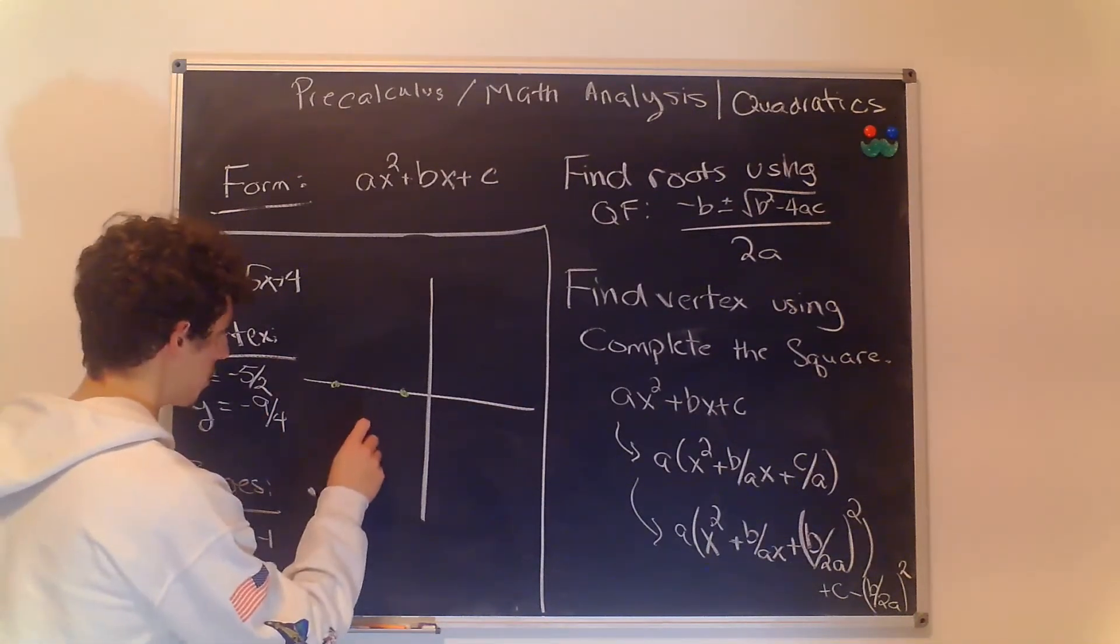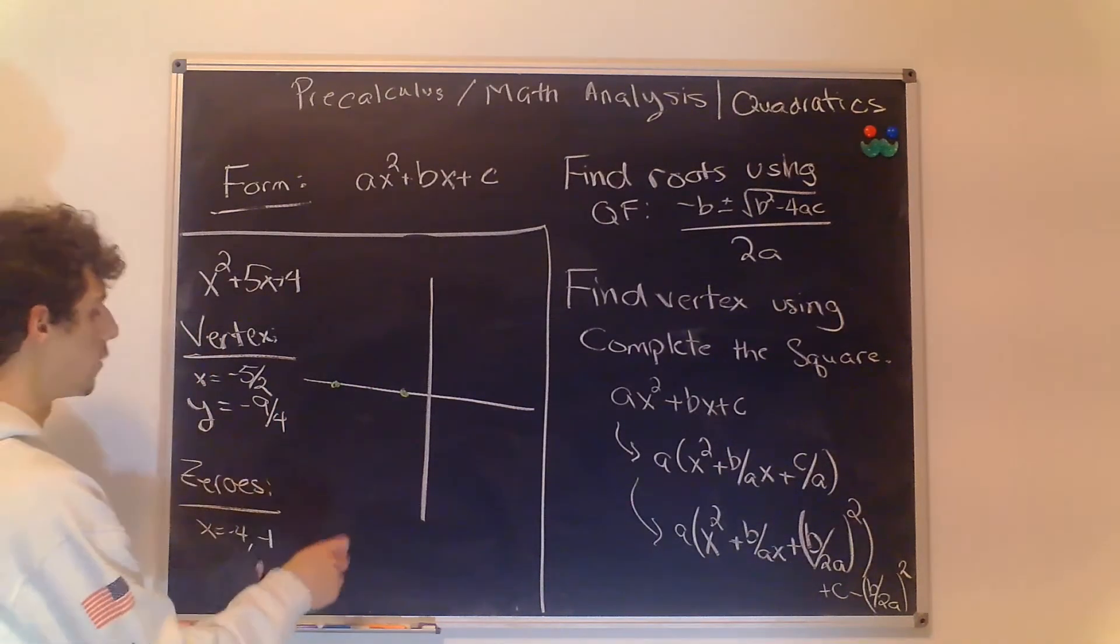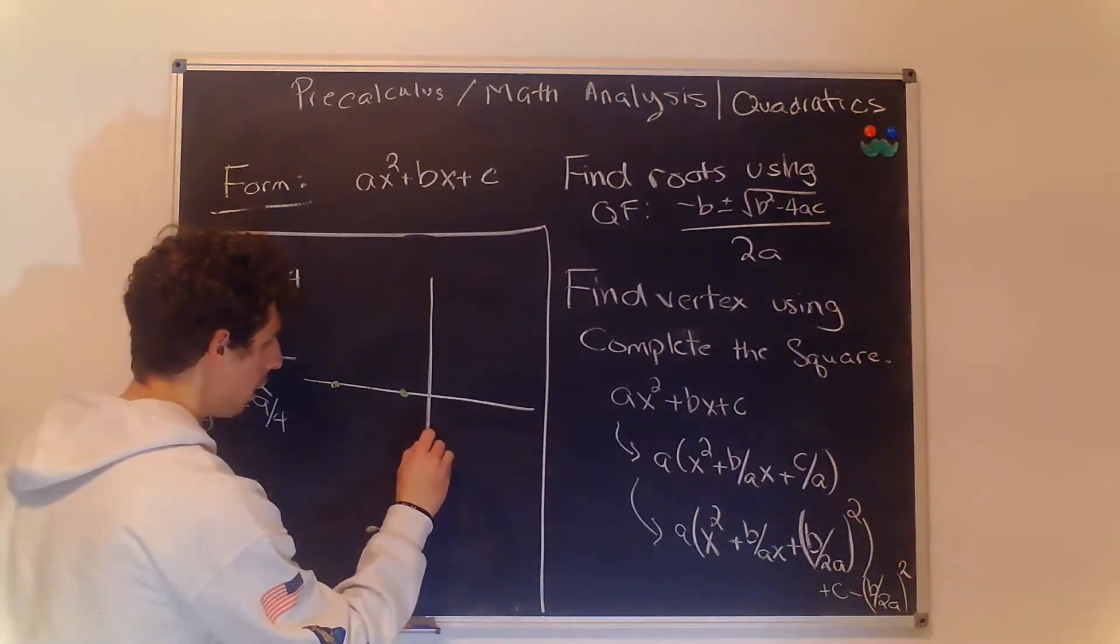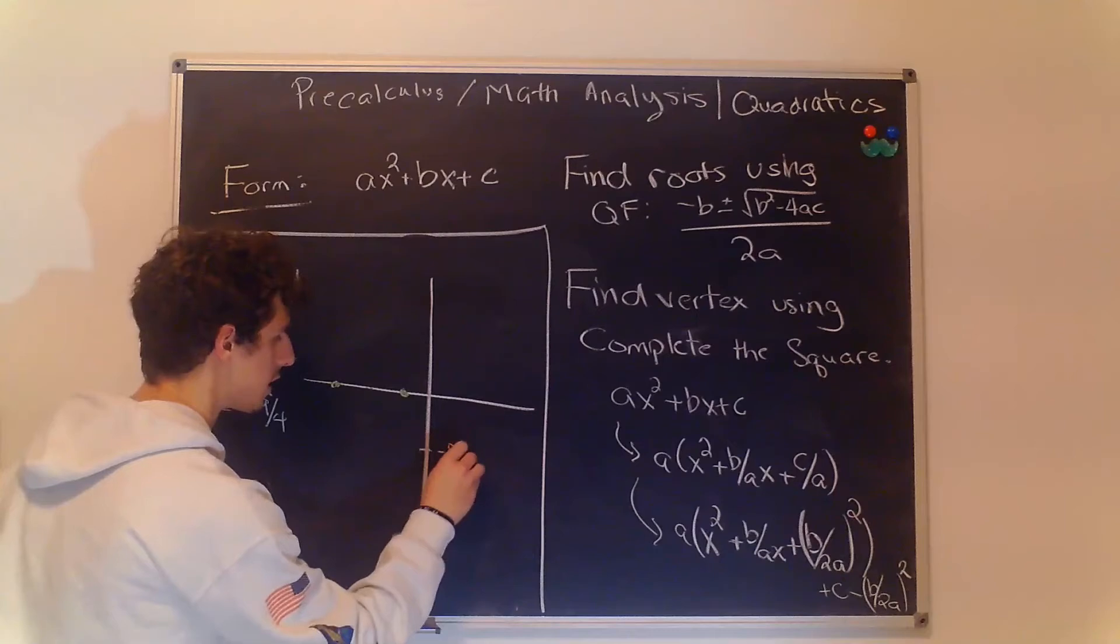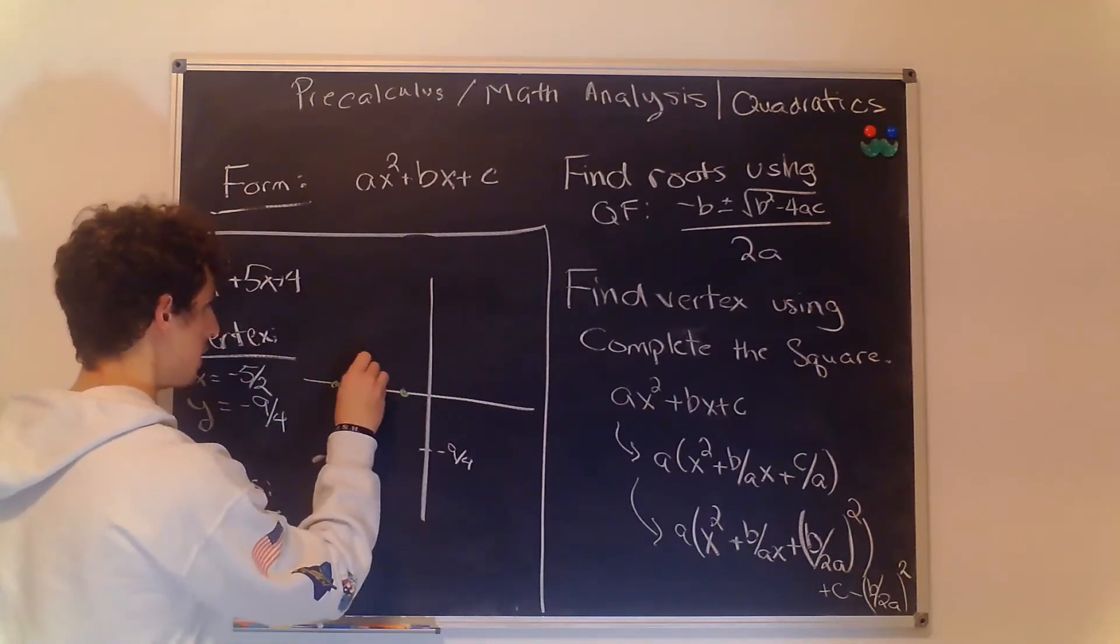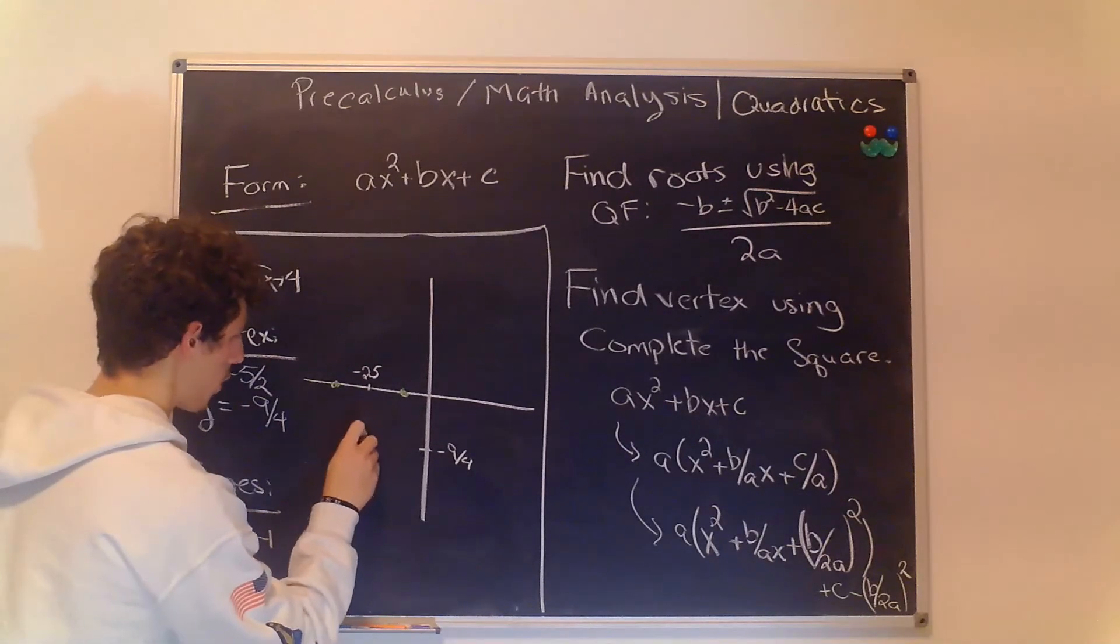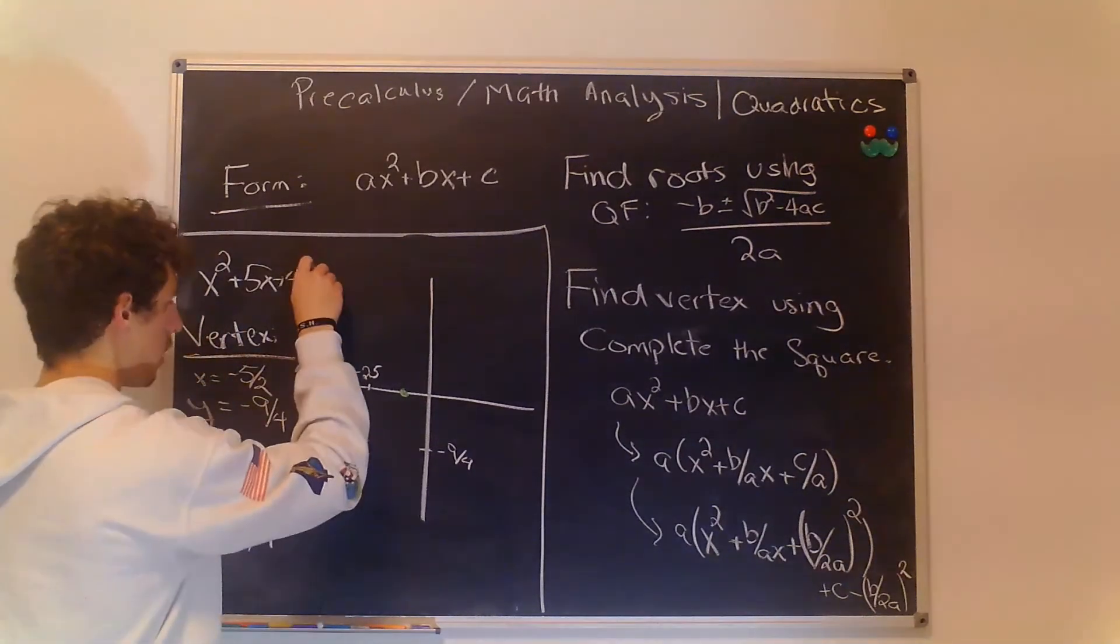That's going to be -5/2 which is going to be right between these two zeros somewhere down here and it's also going to be y = -9/4 so that's going to be just over 2 on the y axis. We'll say that's -9/4 and this is going to be -2.5 or -5/2 on the x-axis so right here looks about right.